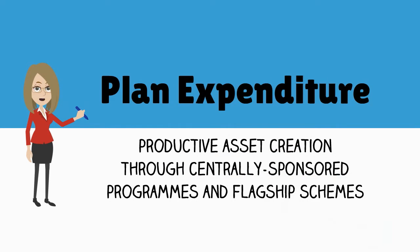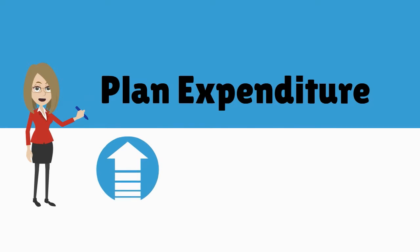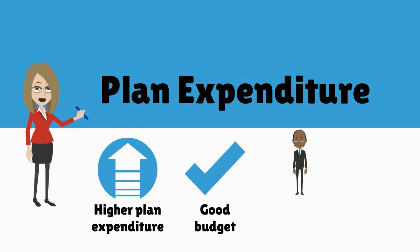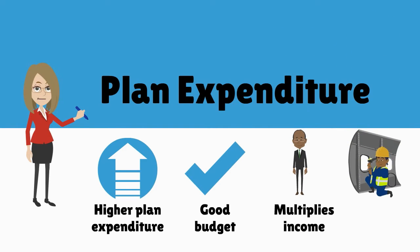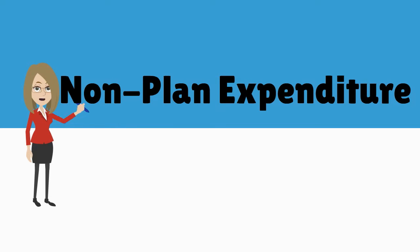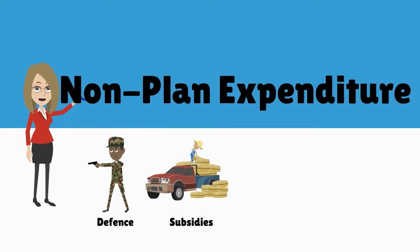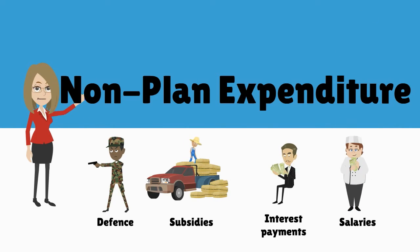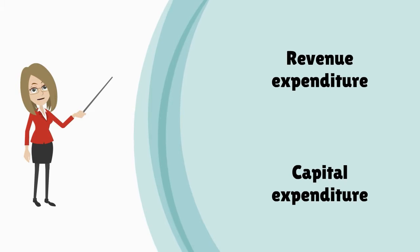Plan expenditure is spent on productive asset creation through centrally sponsored programs and flagship schemes. Traditionally, higher plan expenditure is considered good budget management, as it implies that more funds are going for asset creation that can multiply income and create jobs. Non-plan refers to all other expenditure such as defense, subsidies, and interest payments, including expenditure on establishment and maintenance activities such as salaries.